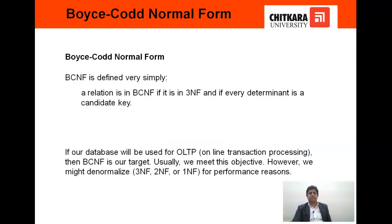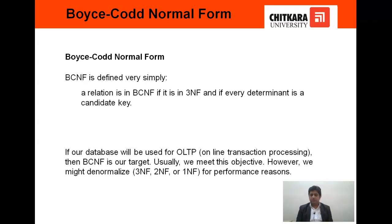Last is BCNF, where BCNF is defined very simply: a relation is in BCNF if it is in 3NF and every determinant is a candidate key. BCNF, or Boyce-Codd Normal Form, is used in online processing systems. Usually we can meet this objective. However, we might denormalize 3NF, 2NF, and 1NF.